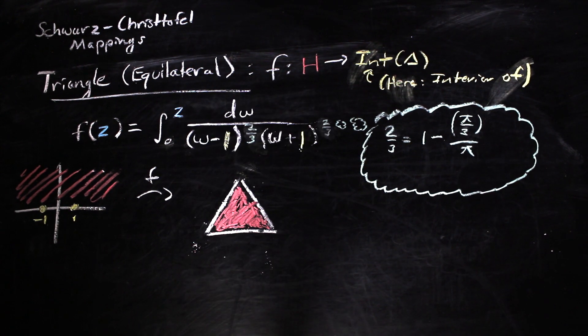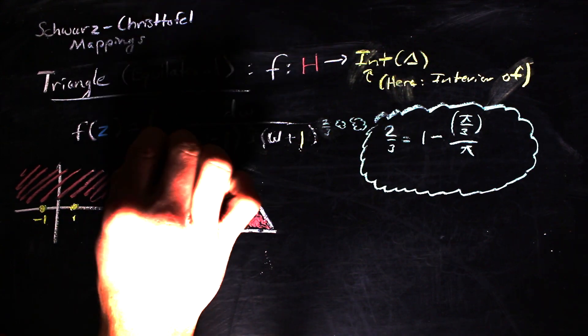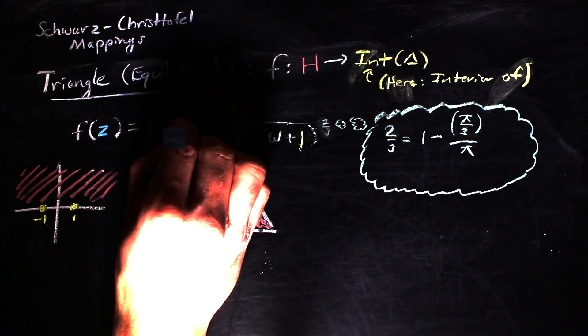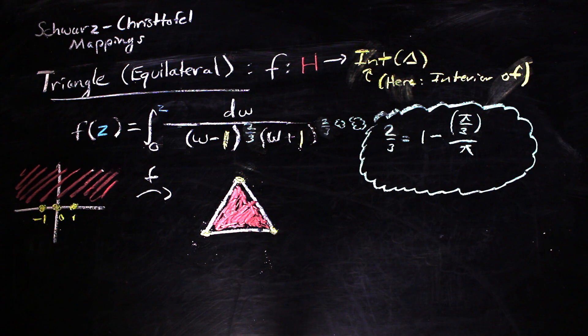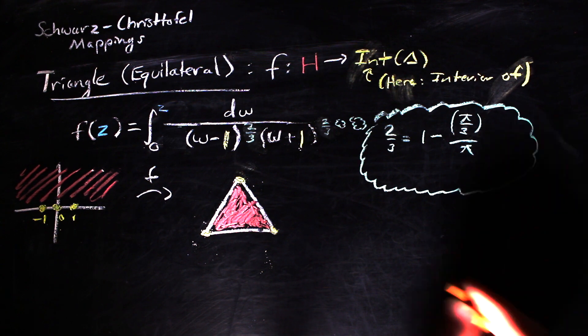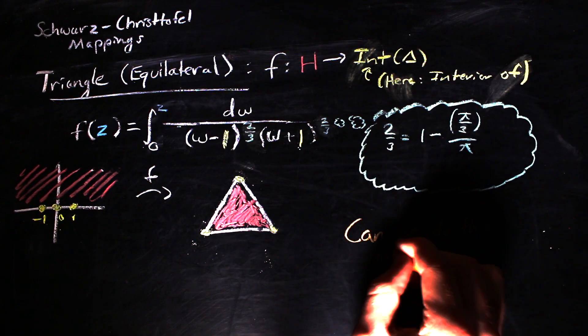Now we said earlier that we can conformally map any simply connected region to any other simply connected region. But if the equation for a plain old equilateral triangle is that ugly, do we even know the formula for simply connected regions,